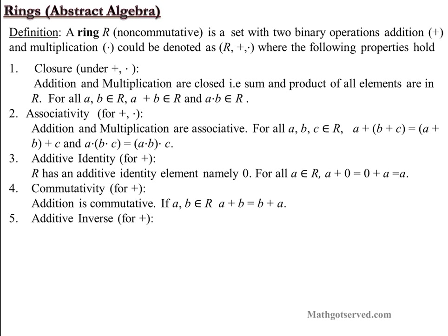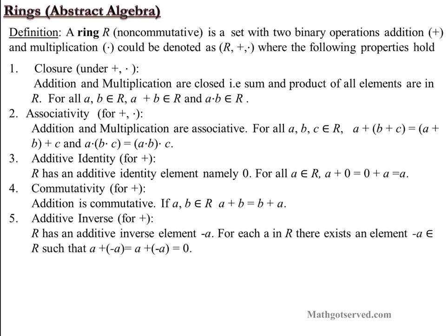The next axiom is additive inverse — for addition only. R has an additive inverse: for each A in R there exists an element negative A in R such that when you add the element and its additive inverse in any order — A plus negative A, or negative A plus A — you end up with the additive identity element 0. So there is an additive inverse for every element of a set that is a ring.